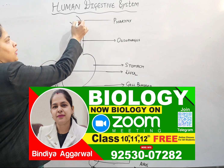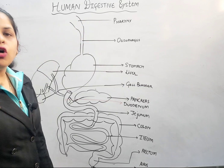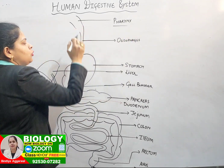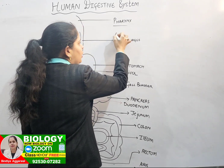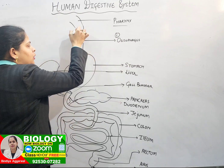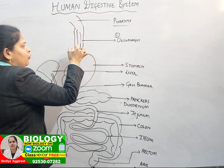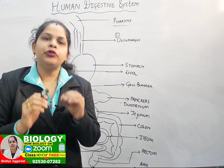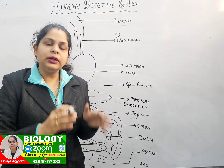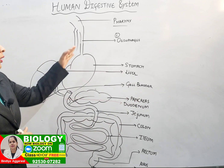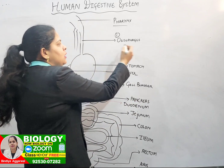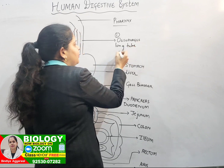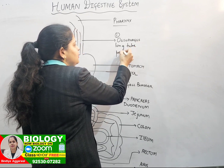First of all, from the buccal cavity or the mouth, we have a common opening called the pharynx, and this pharynx opens into two tubes: number one is the esophagus and number two is the windpipe. We are not going to talk about the trachea here because it is not included in the digestive system. The esophagus is a long tube that exhibits peristalsis.